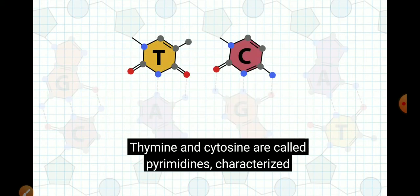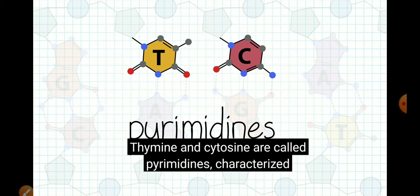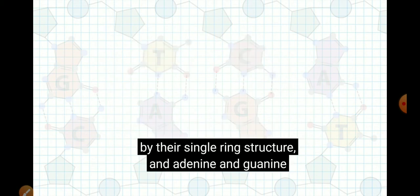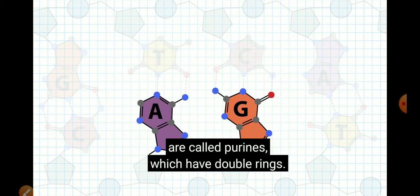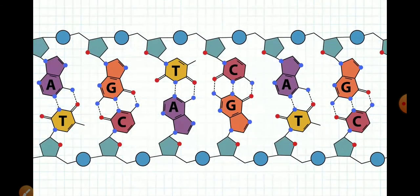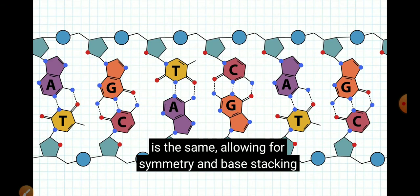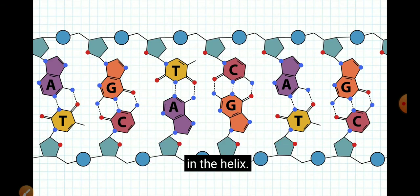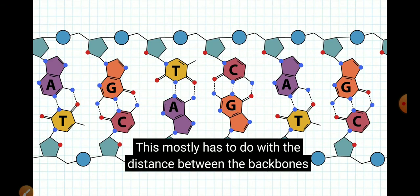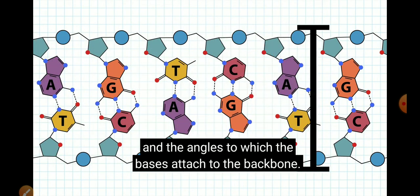Thymine and cytosine are called pyrimidines, characterized by their single ring structure, and adenine and guanine are called purines, which have double rings. The geometry of the AT or TA and GC or CG base pairs is the same, allowing for symmetry and base stacking in the helix. This mostly has to do with the distance between the backbones and the angles to which the base is attached to the backbone.